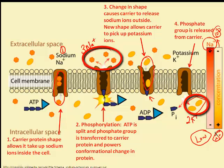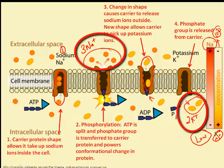So three sodium ions exit the cell and two potassium ions re-enter the cell. Three positive ions have left and two have returned back in. Since the goal of this whole process is to make the outside of the cell more positive, that definitely achieves the goal.